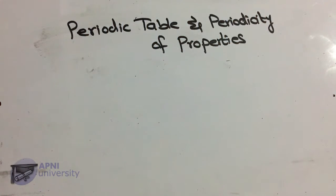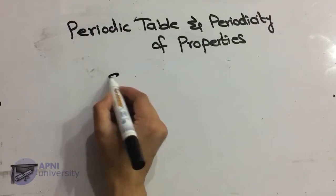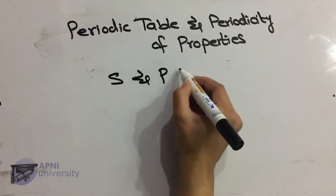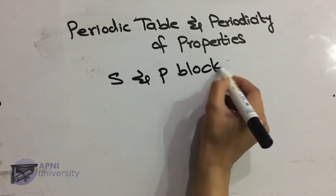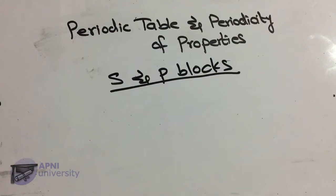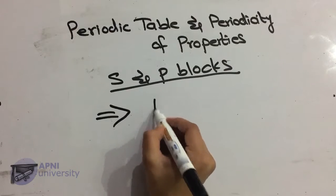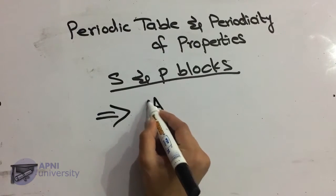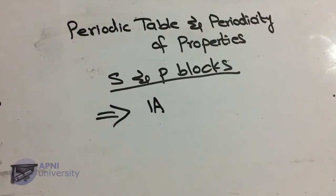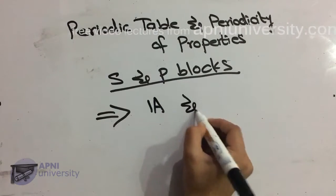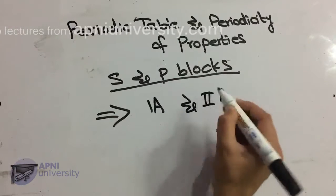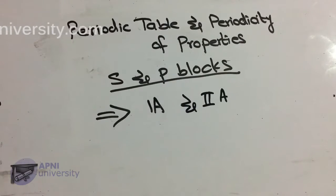Our next topic is S and P blocks in the periodic table. On the basis of valence sub-shell, elements in the periodic table can be classified into four blocks. Elements of group 1A and group 2A contain their valence electrons in the s sub-shell, therefore these elements are called s-block elements.